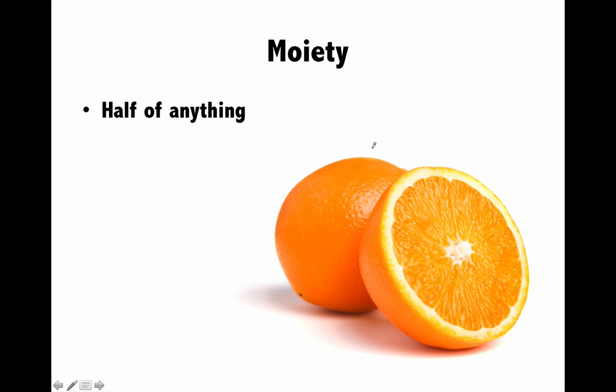Next is 'moiety', again a legal term. Moiety means half of anything. For example, this orange divided in half — each half is a moiety. Half of anything is called moiety.